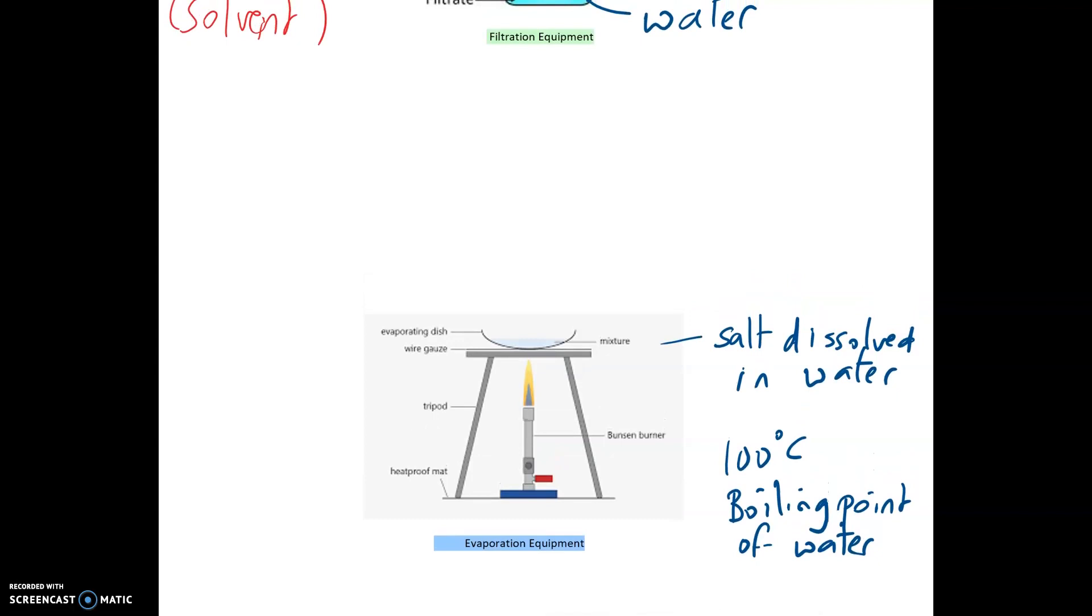When you are setting up your evaporation, you start with your evaporating dish. You've got a gauze, a tripod, a heat mat, and a Bunsen burner. When you heat things, you've got to make sure it's on the roaring blue flame as shown in the diagram.